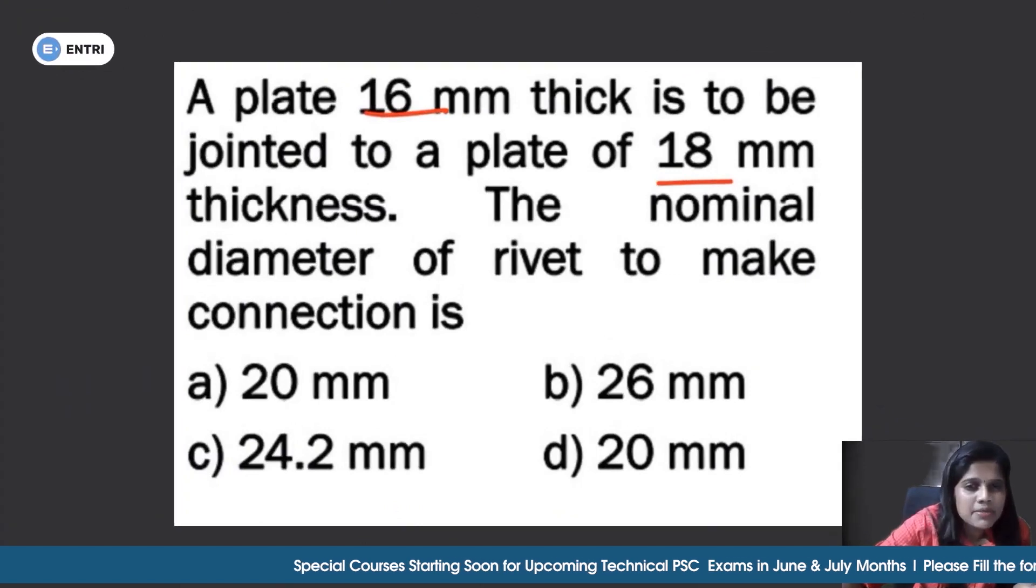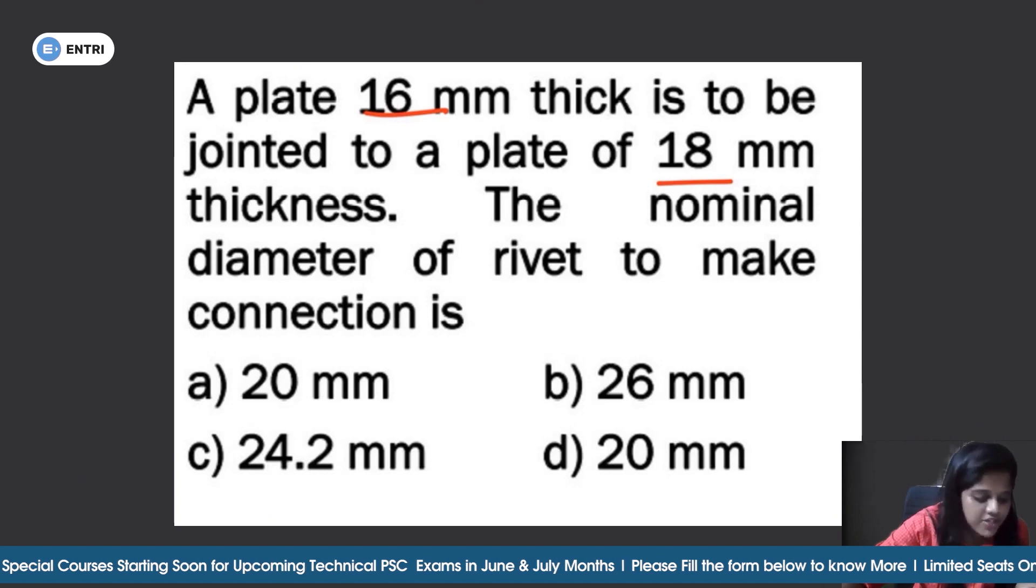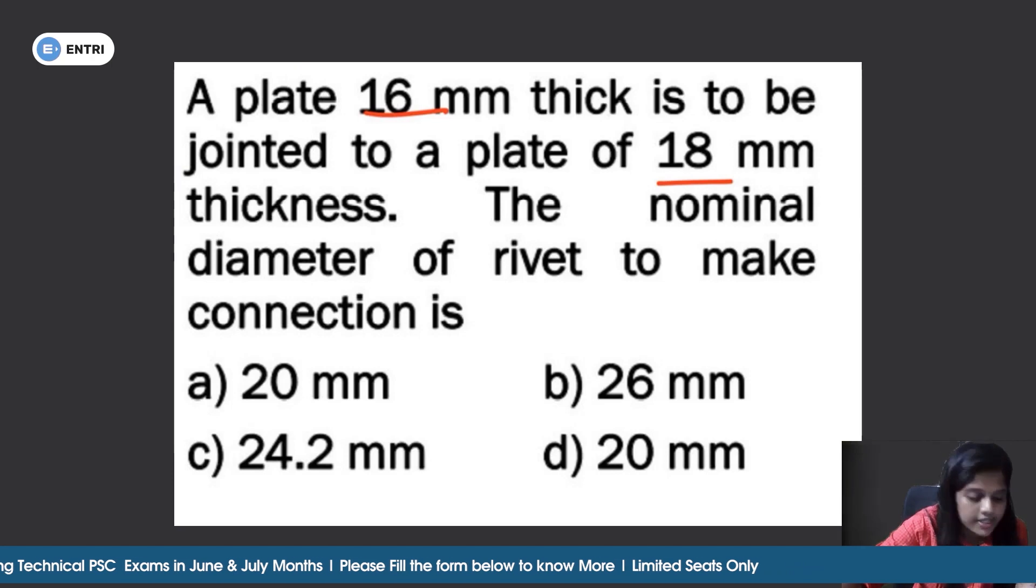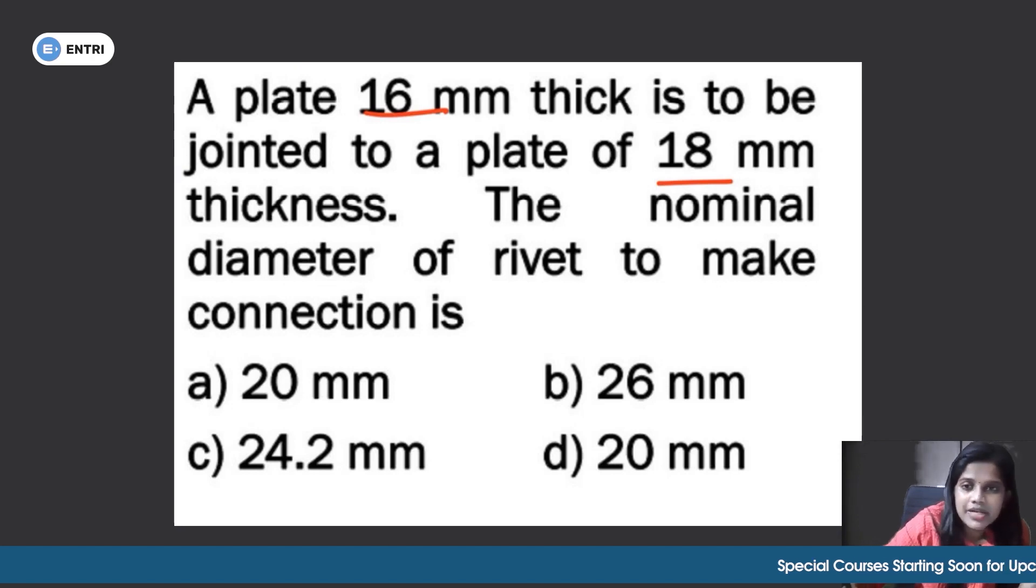A plate 16 mm thick is to be joined to a plate of 18 mm thickness. What is the nominal diameter of the rivet to make this type of connection? The plate 16 mm thick is to be joined, the diameter of the rivet - you can use Unwin's formula.